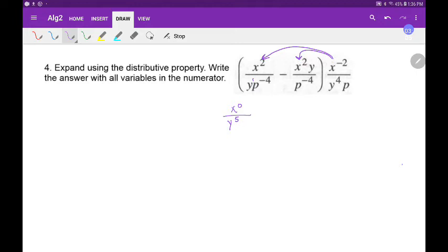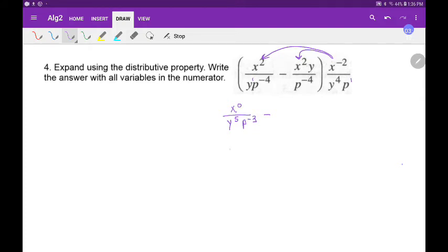And I have p to the minus 4 and p to the 1, so I'm adding. That's p - I was going to write y - p to the minus 3. And then I have my other term. I'll let you take care of that. And I'm supposed to write the answer with all variables in the numerator. Well, x to the 0 is 1, so I don't really need to worry about that. If I'm going to move the y to the fifth, that has to become y to the negative fifth if I'm going to write it on the top. And p, I'm going to change the sign of that as well. And again, I'll let you worry about the second part here.